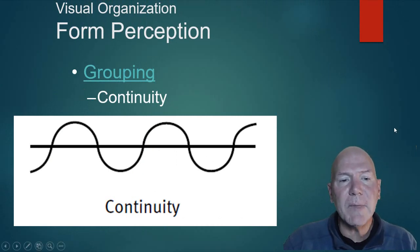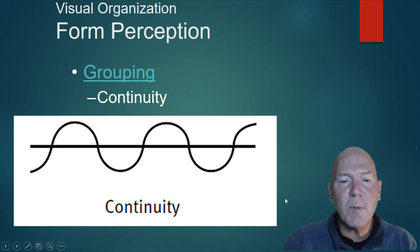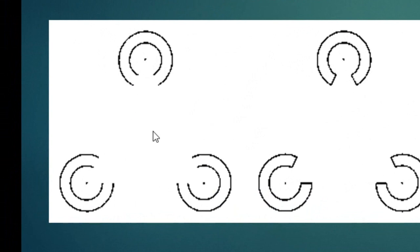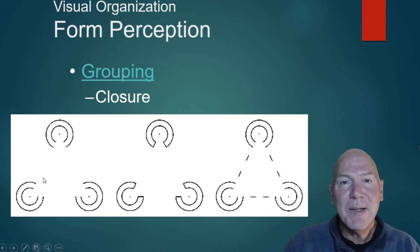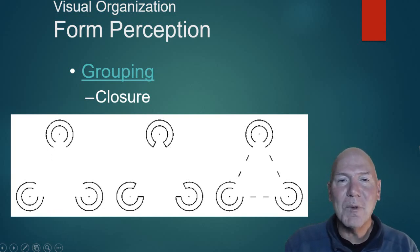Continuity is another Gestalt principle — a flowing line appears to continue smoothly even if it could be interpreted as separate semicircles, because our brain perceives it as flowing together. Closure is the idea that our brain closes incomplete shapes: you may see a triangle even when no triangle is actually drawn, just suggested corners. Our brain makes us see the complete shape. That covers the eye; in our next video we'll look at the ear.